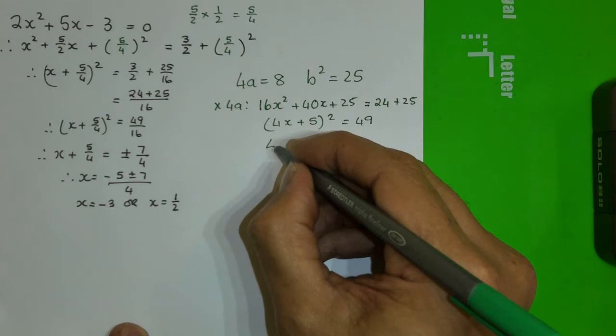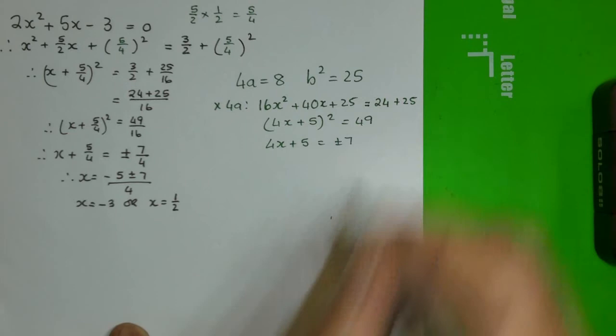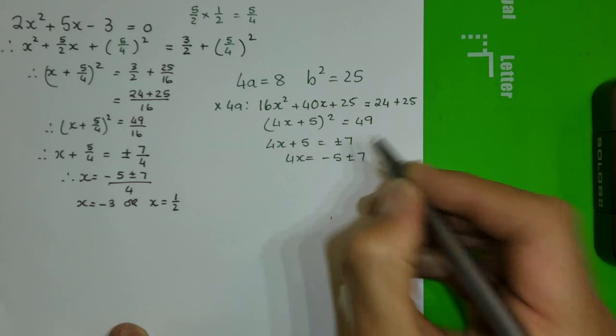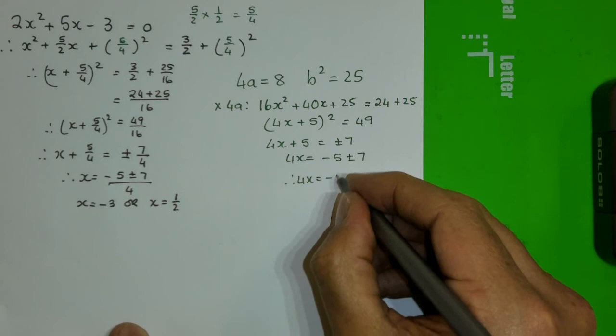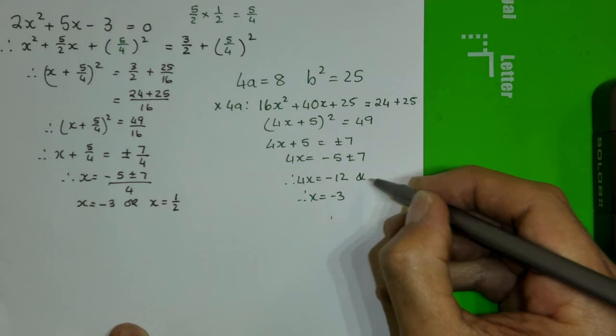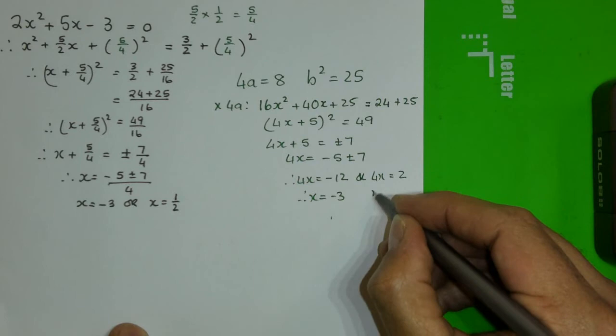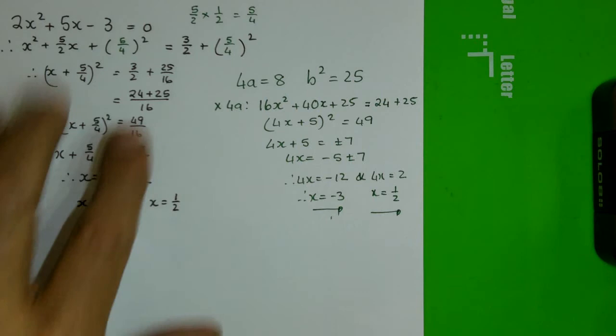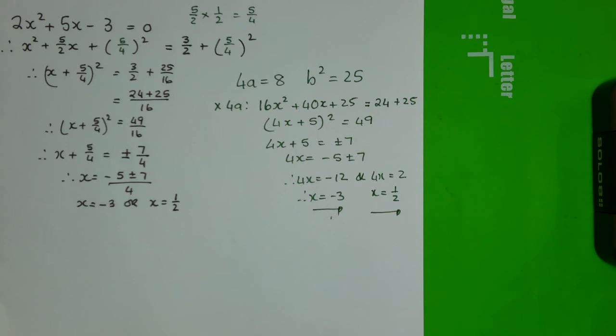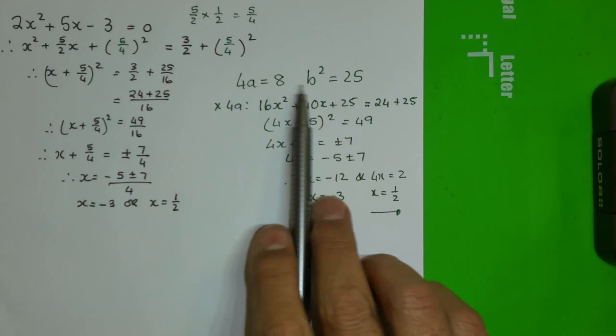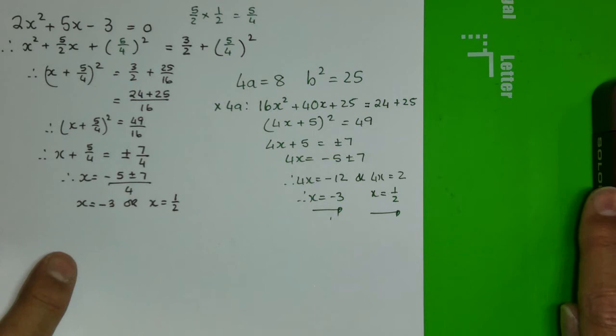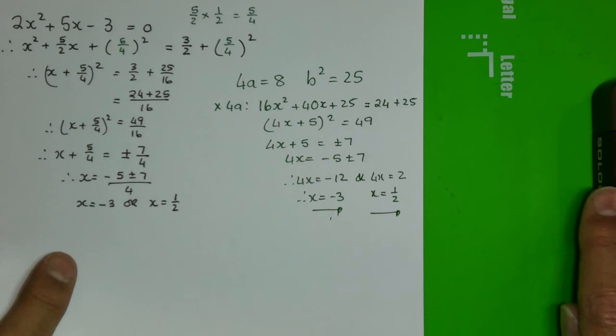Taking the square root of both sides gives 7 on the right, so 4x = −5 ± 7. This gives 4x = −12, so x = −3, or 4x = 2, so x = 1/2. If you battle with fractions, use this 4ab² approach — it avoids the fractions and helps you complete the square in a much easier way. I hope that helps you.